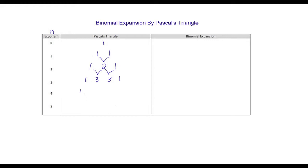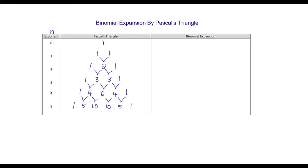Next 1 comes down, 1 plus 3 becomes 4, 3 plus 3 becomes 6, 3 plus 1 becomes 4, and this 1 comes down. Again 1, 1 plus 4 becomes 5, 4 plus 6 becomes 10, 6 plus 4 becomes 10, 4 plus 1 becomes 5, again 1 comes down. This is our Pascal's triangle for 5 exponents. This can be extended for any number of values.